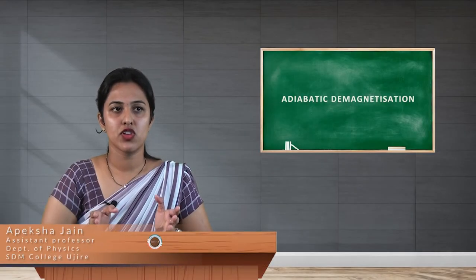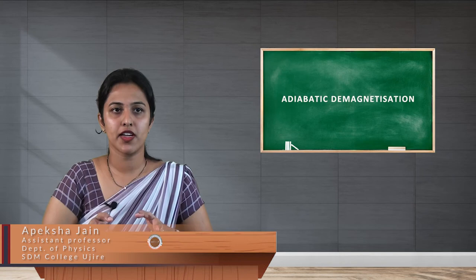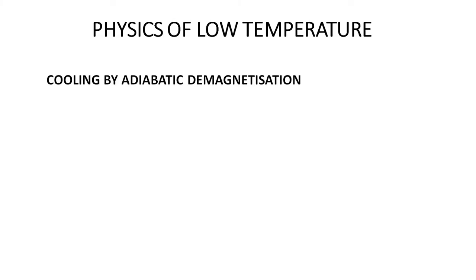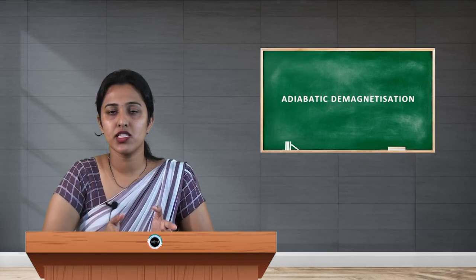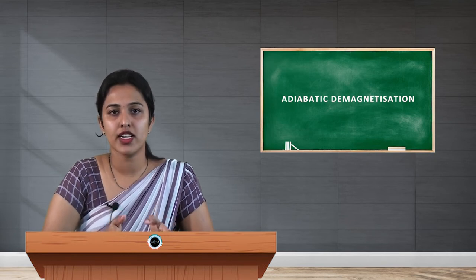Hello students. Under physics of low temperature, we are going to study about cooling by adiabatic demagnetization — the principle and procedure. Adiabatic demagnetization is defined as a process by which temperatures considerably below 1 Kelvin can be obtained using a paramagnetic salt, that is, substances for which magnetic susceptibility is small but positive. In this process we can achieve temperatures below 1 Kelvin.